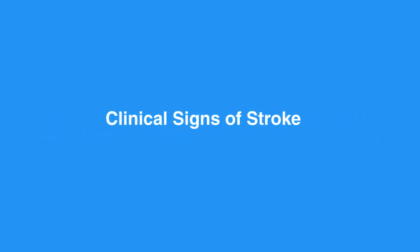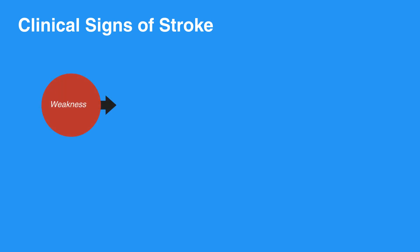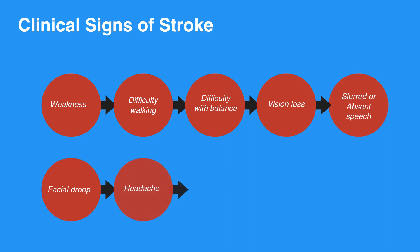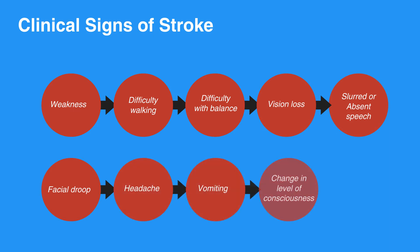Clinical signs of stroke depend on the region of the brain affected by decreased or blocked blood flow. Signs and symptoms can include weakness or numbness of the face, arm, or leg, difficulty walking, difficulty with balance, vision loss, slurred or absent speech, facial droop, headache, vomiting, and change in level of consciousness.